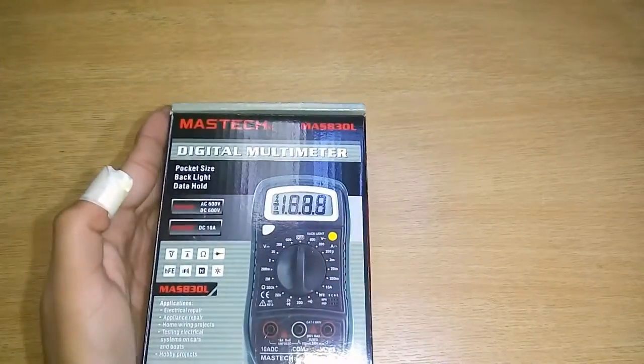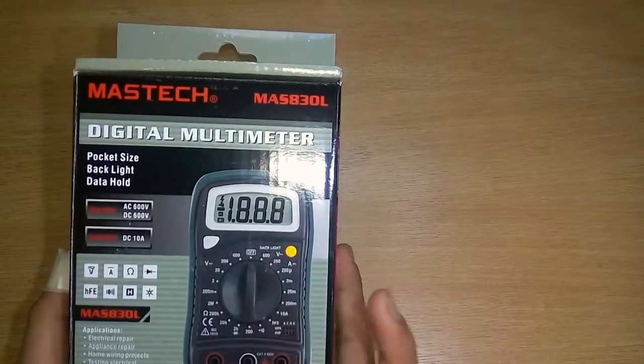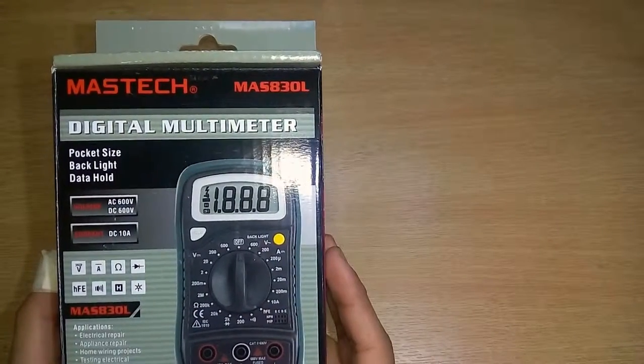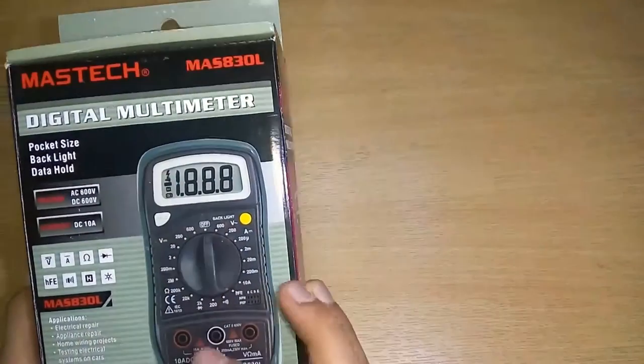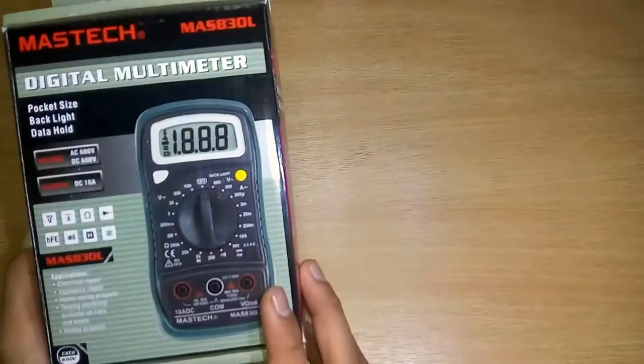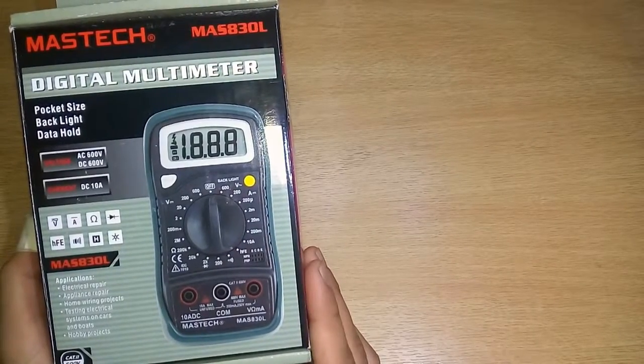Akar here, and today I have with me the Mastec MAS 830L, a good-looking three and a half digit digital multimeter. This looks a cool color—the black and military green—but we have with us the yellow looking multimeter.